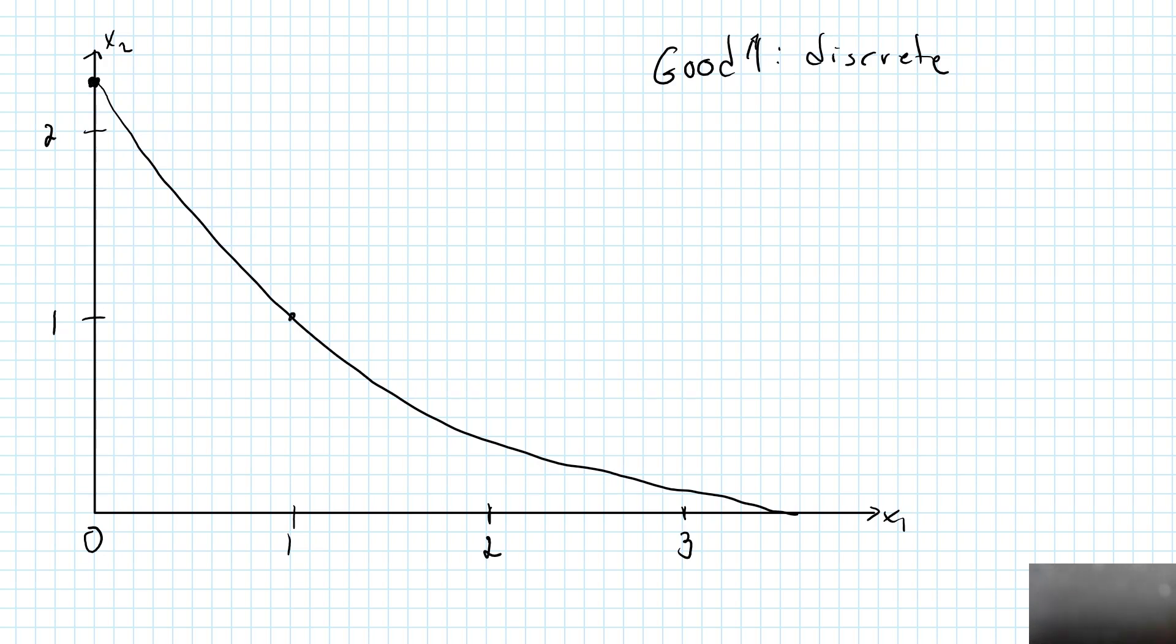1 unit of good 1 and slightly above 1 unit of good 2 would be on the indifference curve. 2 units of good 1 and slightly less than 0.4, and finally 3 units of good 1 and slightly above 0.1.